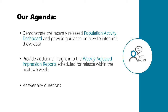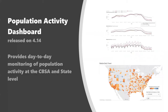First, we're going to demonstrate the recently released Population Activity Dashboard and talk about the methodology behind how we get to that data, as well as guidance on how to interpret it. After that, we'll talk about the coming product — the Weekly Adjusted Impressions Report — scheduled for release within the next one to two weeks. We'll also try to answer questions throughout, and I'm going to hand it off to Dylan, who's going to drive a lot of the conversation and demonstration.